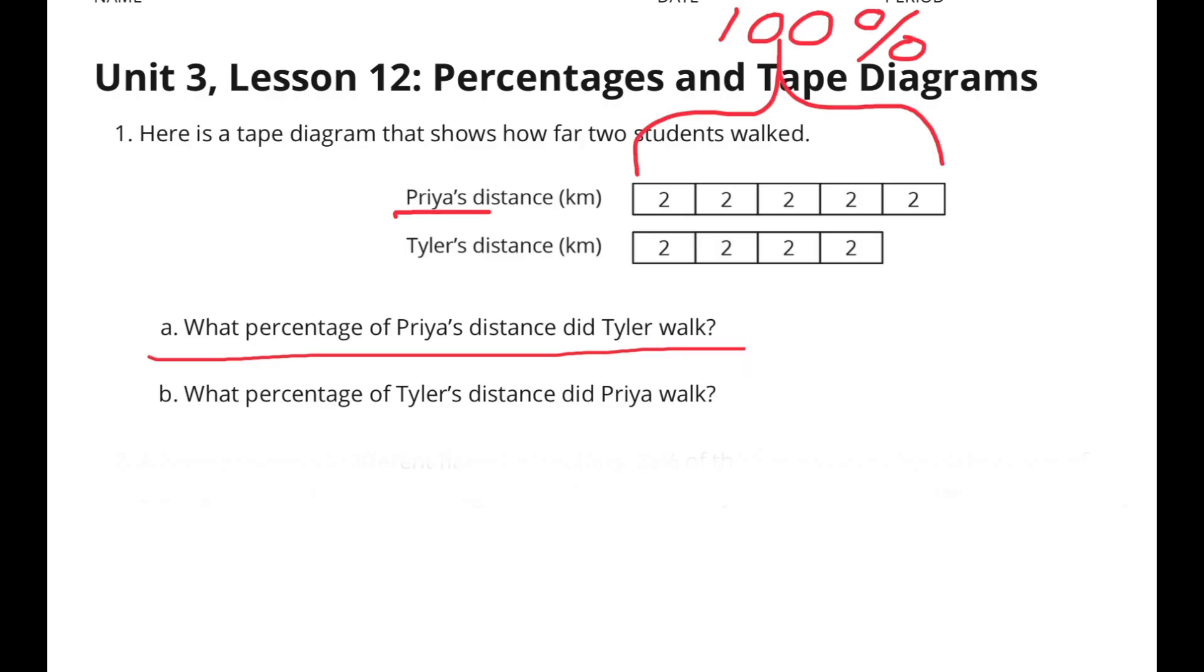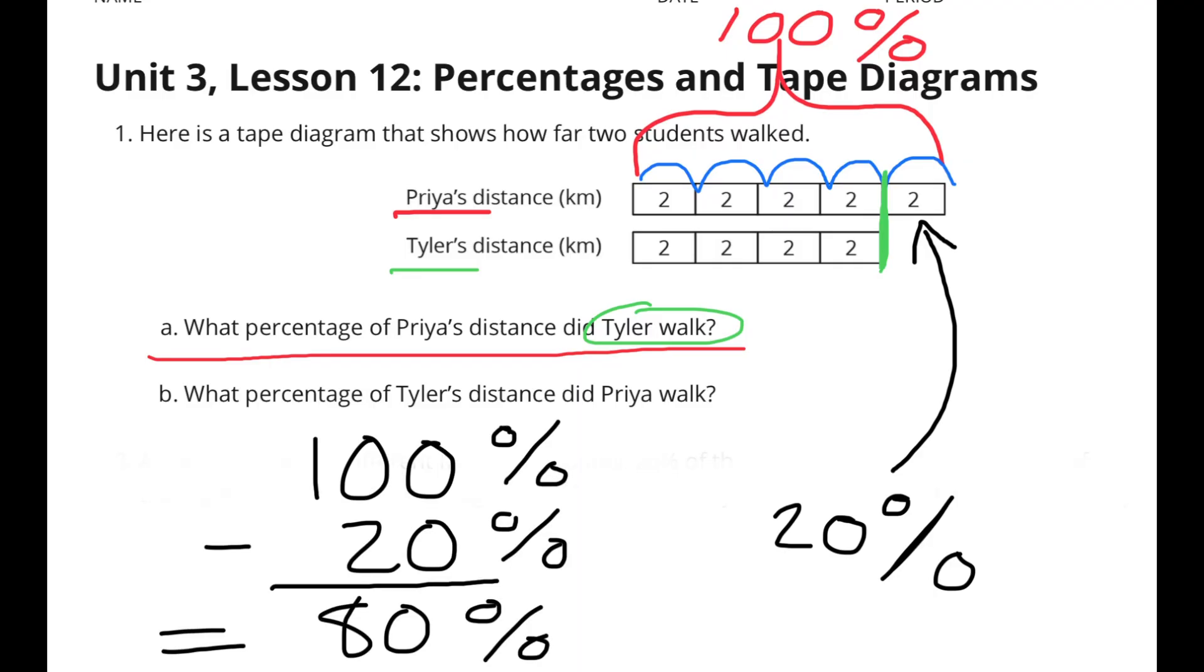All five of these sections combined total 100% of the distance Priya walked. 100% divided by five sections equals 20%, so each section is worth 20%. Out of the five sections that Priya walked, Tyler only walked four of those sections, which would be four out of five. This space represents 20%, so Priya actually walked 20% further than Tyler. 100% minus 20% equals 80%. The distance that Tyler walked was 80% of the distance that Priya walked.